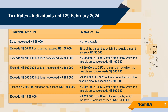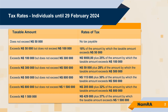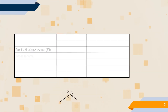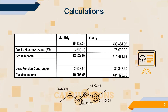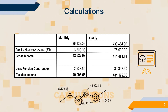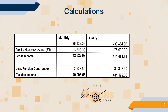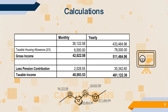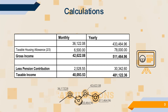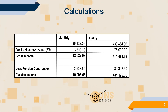We're going to make use of the old tax table and then we'll move over to the new tax table. In this scenario, we're saying that the person's basic monthly salary is $36,122.08 and the person's taxable housing allowance is $6,500.